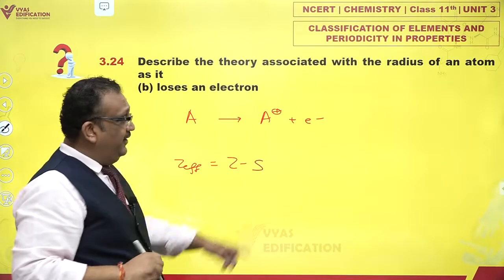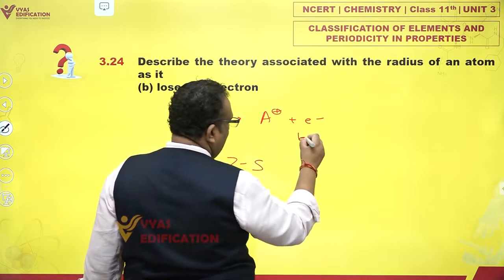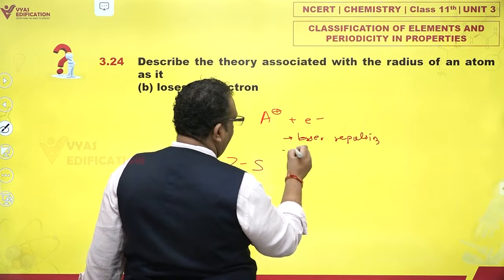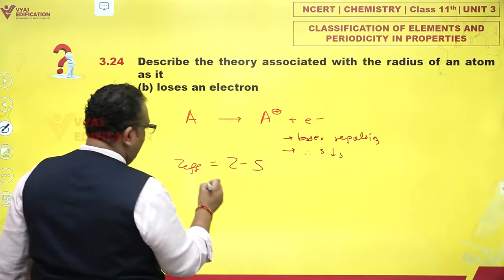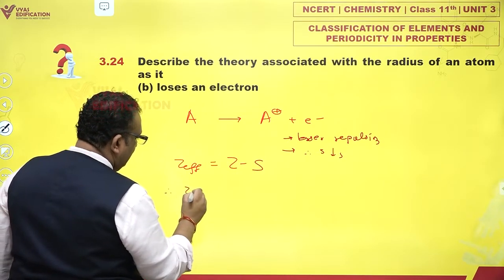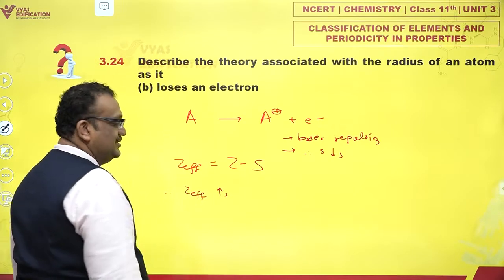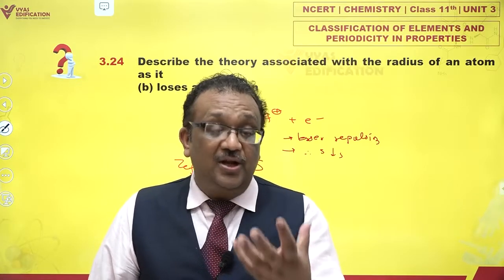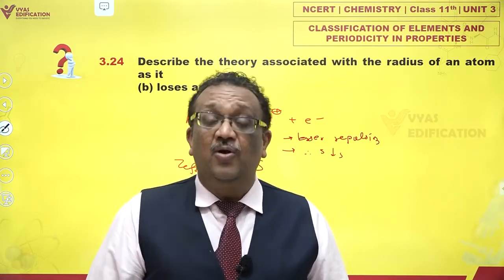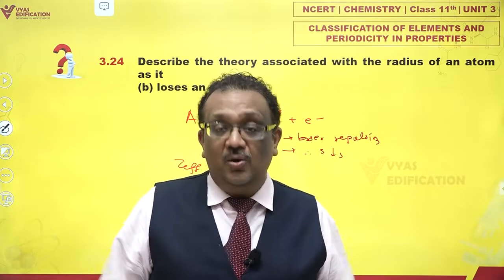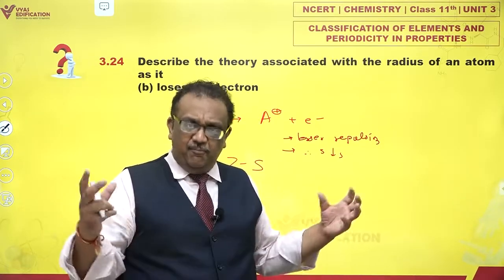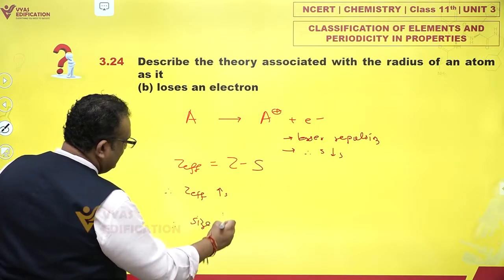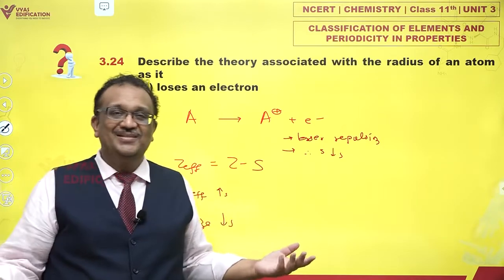If electrons are lost, there is lesser repulsion, therefore S decreases, and therefore Z_effective increases. The increased effective nuclear charge means electrons are now experiencing greater attraction by the nucleus. The repulsion between electrons has gone down, they are attracted more and pulled inward, and therefore the atomic radius decreases — as simple as that.